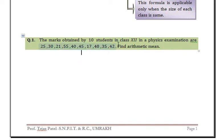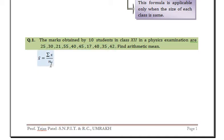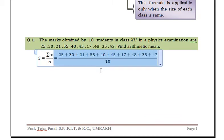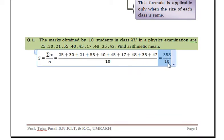Example 1: The marks obtained by 10 students in class 12 in a physics examination are given. Find the arithmetic mean. We have only observations, so the formula is x-bar equals summation x upon n. Summation x means addition of all marks, and n is total number of students. We have 358 divided by 10, so the mean is 35.80.